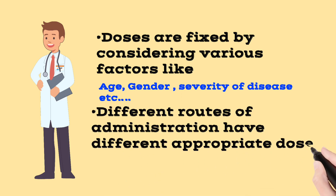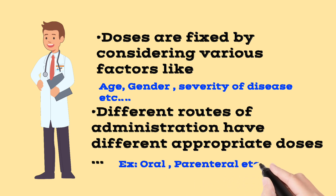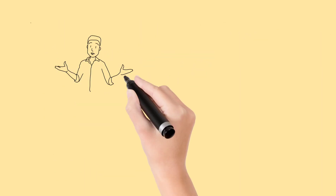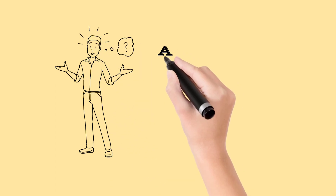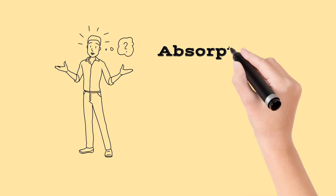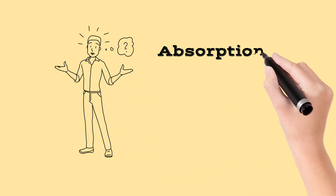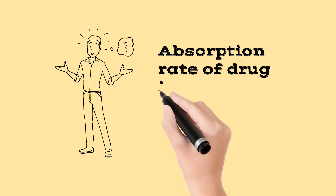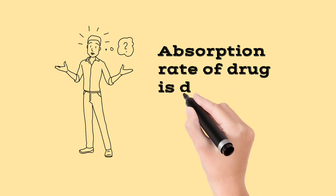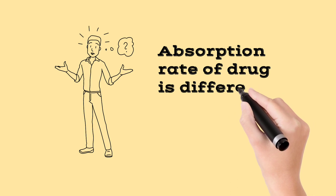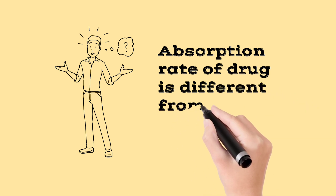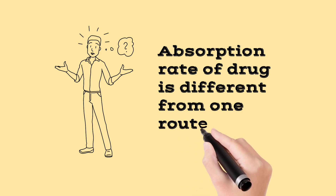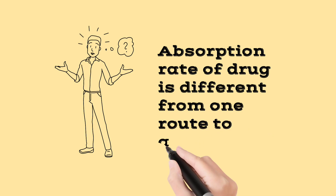For example, there is an oral dose and a parenteral dose. The absorption rate of the drug is different in oral and parenteral routes, which is why the dose differs between these routes of administration.